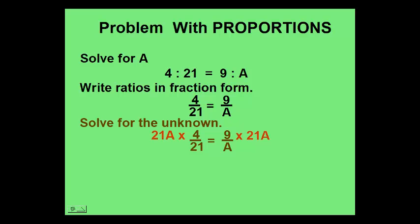We'll multiply 21A to both sides of the equation. Remember the reason why we do this is so that the 21s will cancel out on the left side, getting rid of our fraction. And the A's will cancel out on the right side, getting rid of the fraction on that side. So we are left with 4A equals 189.